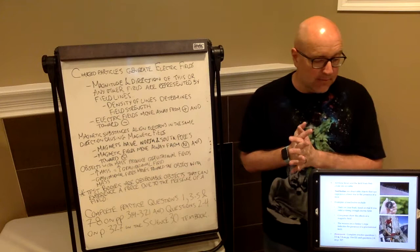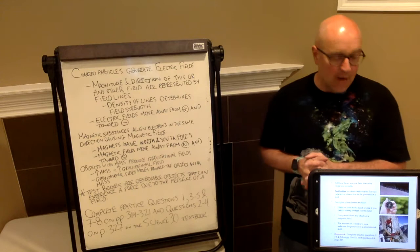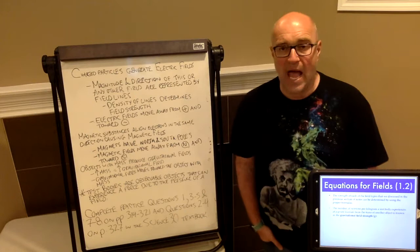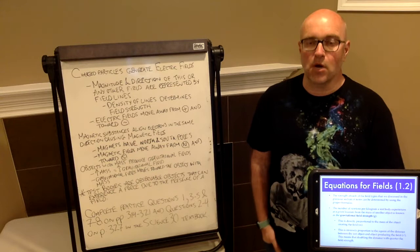That's my discussion for field lines today. For homework, please complete practice questions 1, 3, 4, 5, 7, and 8 on pages 314 to 321, and questions 2, 3, and 4 on page 327. Next day we're going to get into the math behind all of these fields — magnetic, gravitational, and electrical — calculating field strength for all three types. Thanks for tuning in, and we'll see you next time.